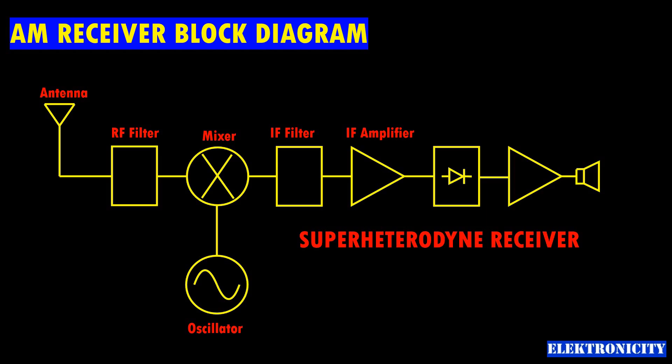An automatic gain control either increases or decreases the gain of the stage, causing the output signal to be roughly the same regardless of the input signal amplitude.